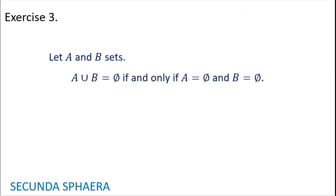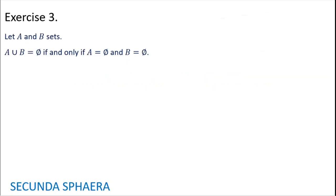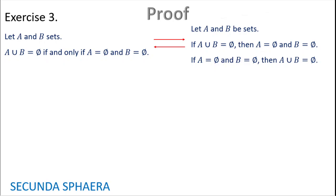For the third exercise, let A and B be sets. A∪B is equal to the empty set if and only if A equals the empty set and B is equal to the empty set. This is again an equivalence, and it can be broken into two implications.